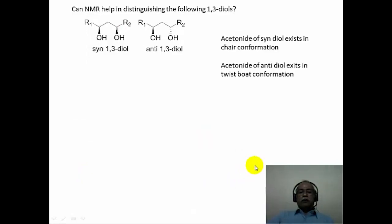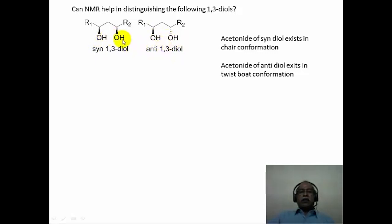Let us move on to the next problem. This is a fairly complex problem — one needs to understand certain chemistry aspects of the molecules. The question is: can NMR help in distinguishing the following 1,3-diols? This is a syn-1,3-diol and this is an anti-1,3-diol; they are diastereoisomers. The question is, can NMR distinguish these two? One needs to know about the chemistry of this molecule when it forms an acetonide by reacting with acetone.